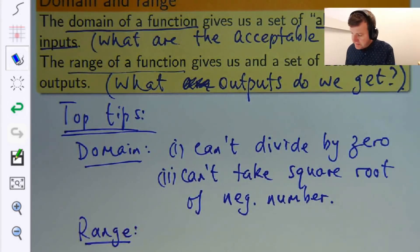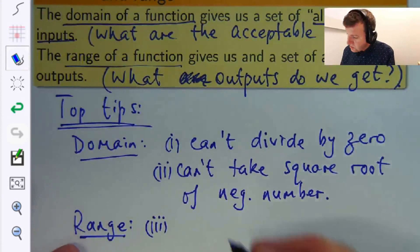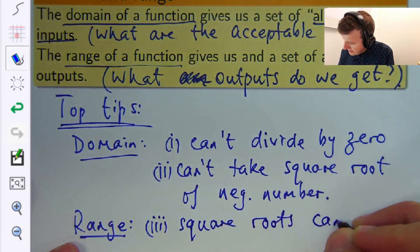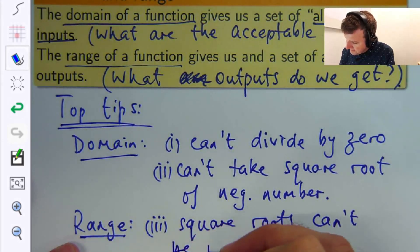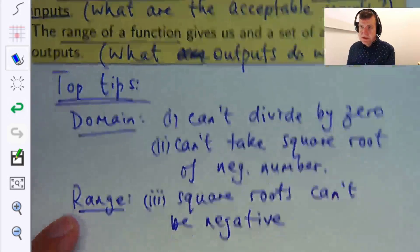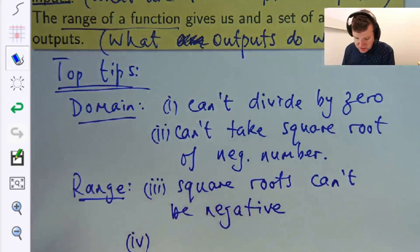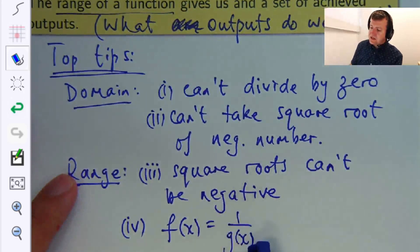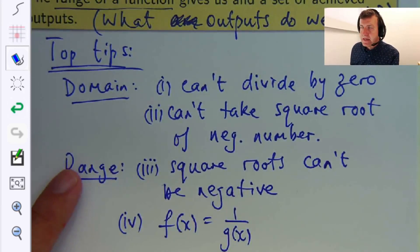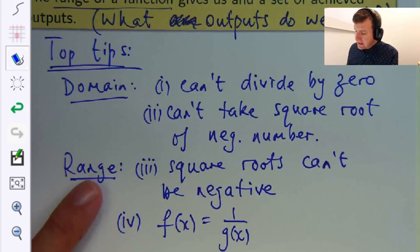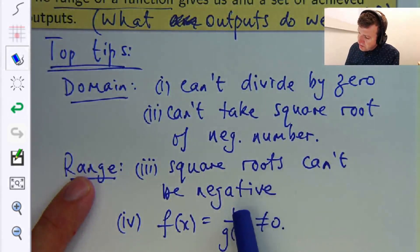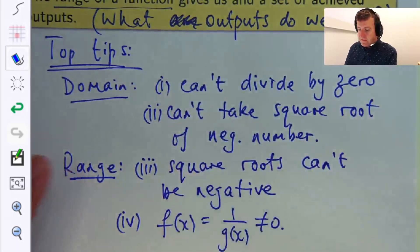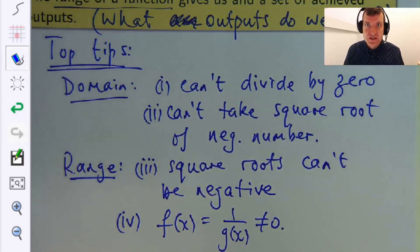And for the range: square roots can't be negative, and I'll unpack that a bit more in a minute. And the last one I'm going to share with you is if you have a function where you have a constant on top and something down the bottom, like 1/x² or 1/(x²+7) or something like that, this can never be zero because the top, the numerator, is never zero. So those are my top tips from a practical point of view when you're actually doing problems. So let's do a problem.